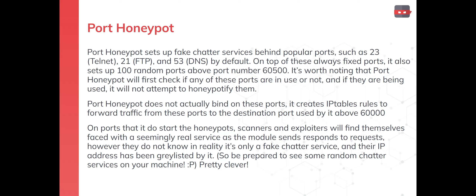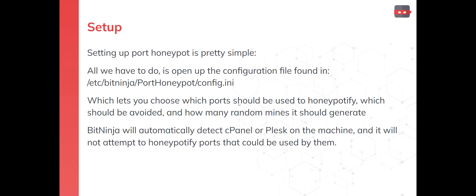So you can expect to see some random chatter services on your machine, which is pretty clever. Setting up is simple and straightforward. With web honeypot, all you have to do is place the trap files or enable honeypotify. With port honeypot you have a few configuration options in the configuration file — you can choose which ports should be honeypotified, which should be avoided, how many random ports to generate, and what the starting port for those random ports should be. BitNinja will also automatically detect if you are using cPanel or Plesk and will not attempt to honeypotify ports used by them.